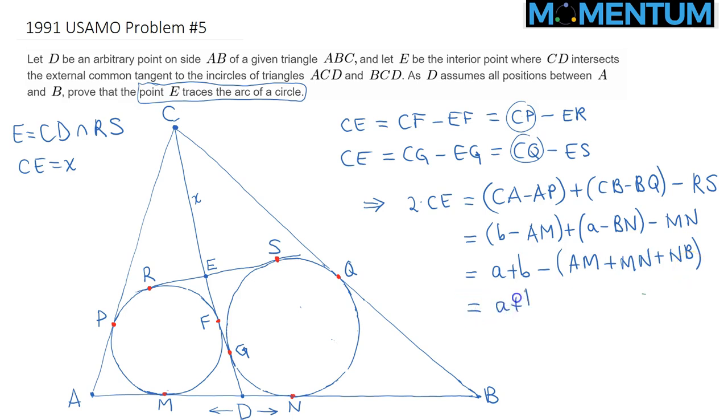So we have A plus B, sorry, minus AB. But AB is just the length C, side length C. So we have A plus B minus C. But recall that this is equal to 2 CE. So this implies that our prospective circle has CE equal to, it's probably better to write it like this, one half times A plus B minus C.